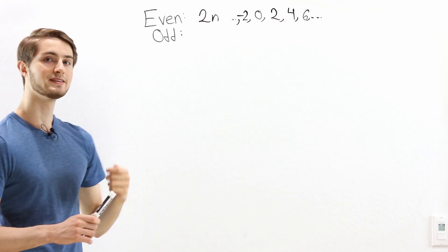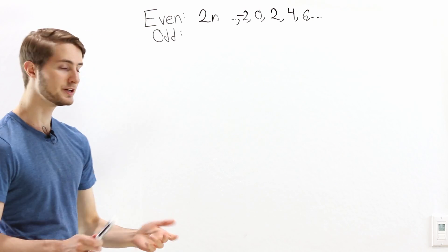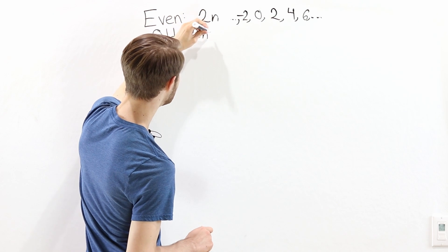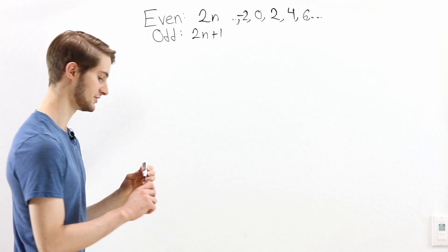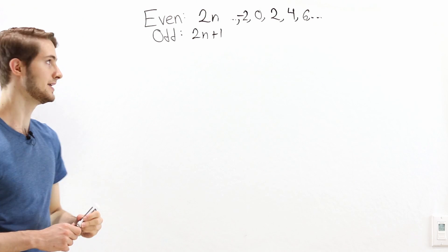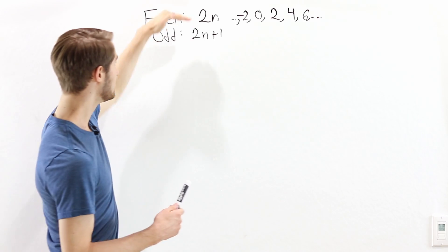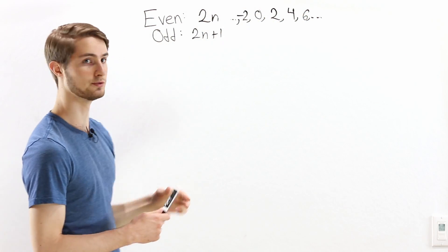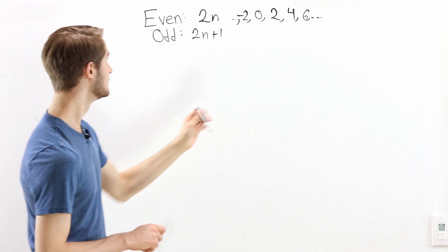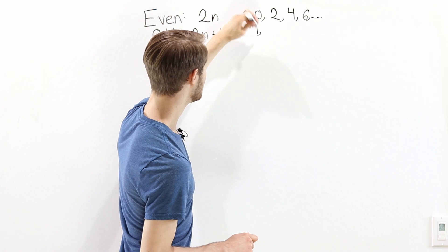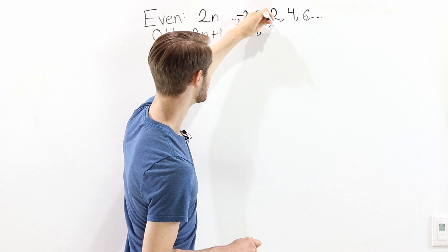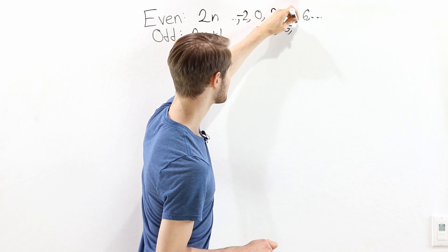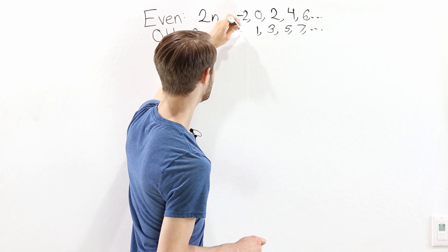So what is an odd number? We say a number is odd if it can be written as 2 times n plus 1 for some whole number n. So that's going to be all of these even numbers but then plus 1: 0 plus 1 is 1, 2 plus 1 is 3, 4 plus 1 is 5, 6 plus 1 is 7, and so on.